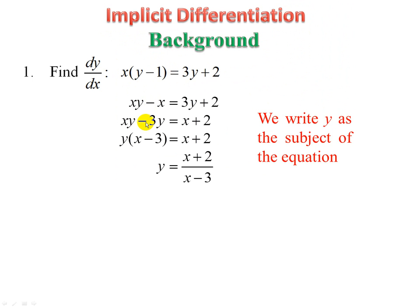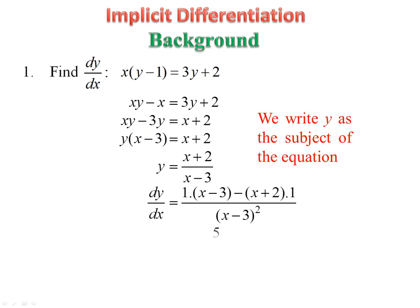Multiply out, collect y terms, take out a common factor of y, then divide. Now we can differentiate. So it's a quotient rule, and there's our derivative by quotient rule.